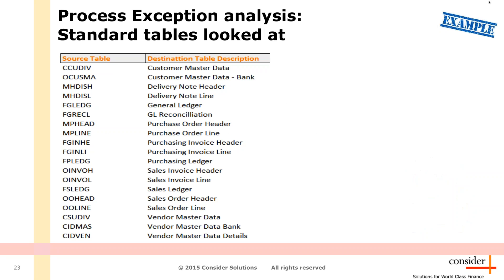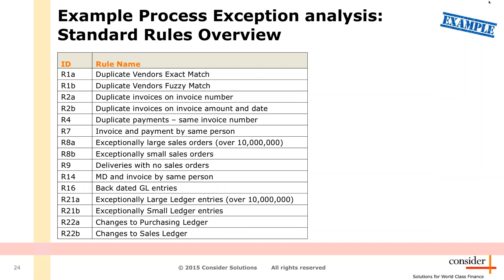If we then look at the process side of things and the exception analysis we do there — first, on this slide you see the source tables that we use; you probably recognize them. And we map them to a more readable structure in Infor Approver, which you see to the right. We use a standard rule set for monitoring the process exceptions listed here.